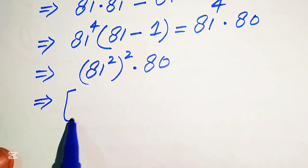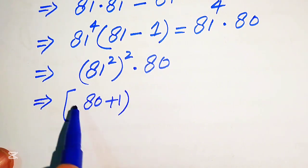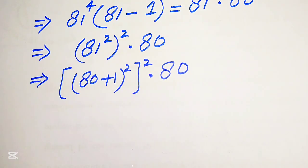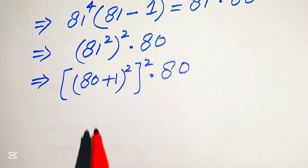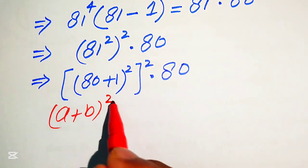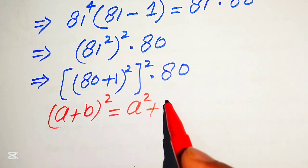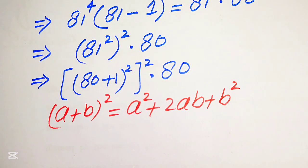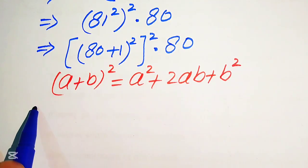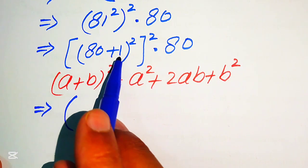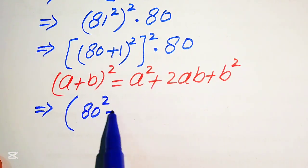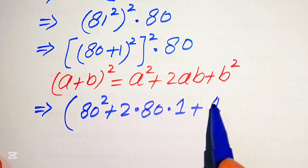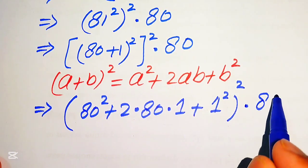For this, we first break 81 as 80 plus 1, whole squared, and then take its whole square, multiplied by 80. In the next step, we apply the algebraic formula: a plus b whole squared equals a squared plus 2ab plus b squared. So we expand the base: with a equal to 80 and b equal to 1, we write 80 squared plus 2 times 80 times 1 plus 1 squared, whole squared, multiplied by 80.